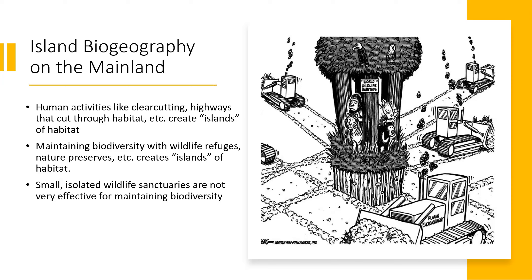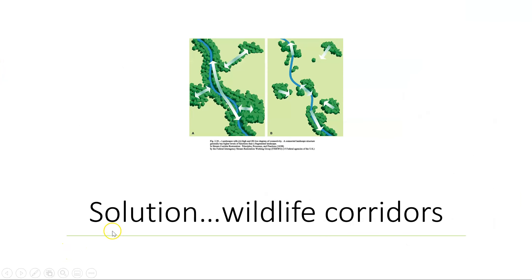Because of that, what we've learned and started doing in the developed world is creating what are called wildlife corridors. The idea is to connect these habitats — even without a large increase in overall habitat area — so we lose that island effect. These corridors allow migrating species to move from one habitat to another, helping increase genetic diversity as species from one population can join another.